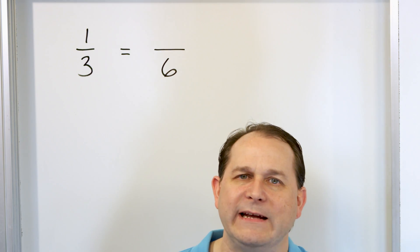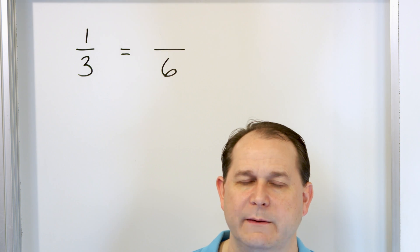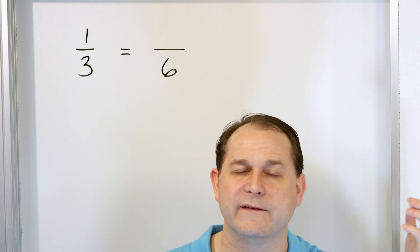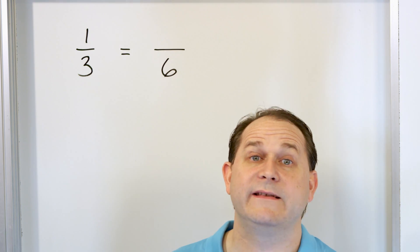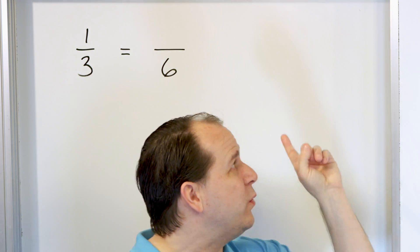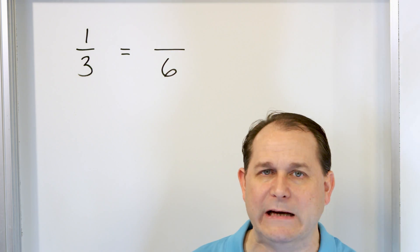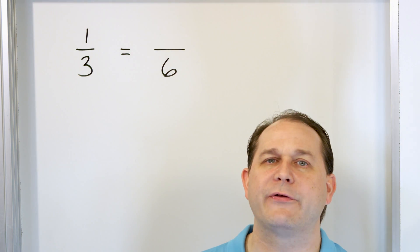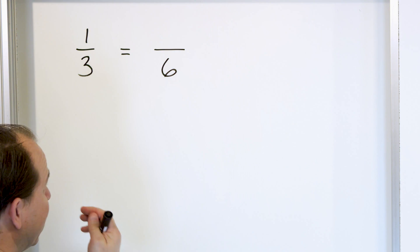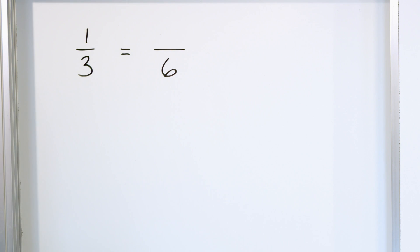So when we say finding equivalent fractions, what it means is we're going to have an equal sign between two fractions, and then we have to provide the answer that goes into the missing blank that makes these two fractions equal. We have to figure out what goes in the blank that makes them equal. We can't put anything there — we have to figure out the right thing to put there. Now, before we actually do it with math, I would like to do it graphically.